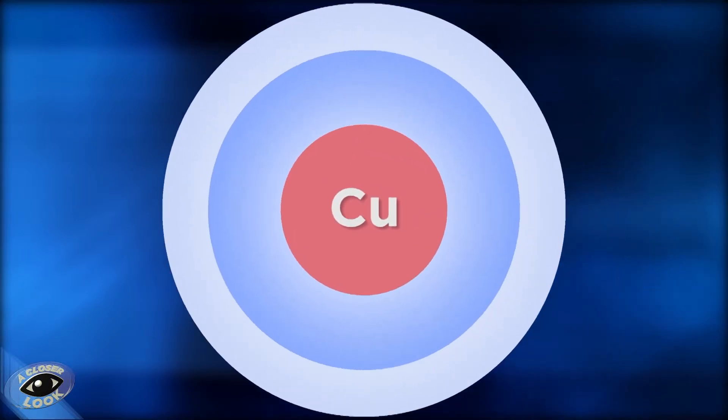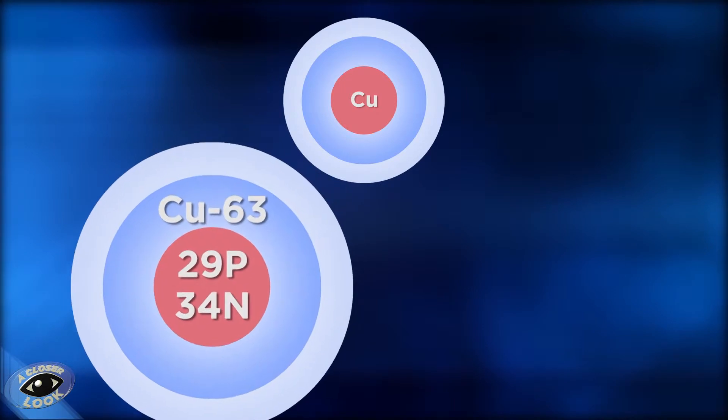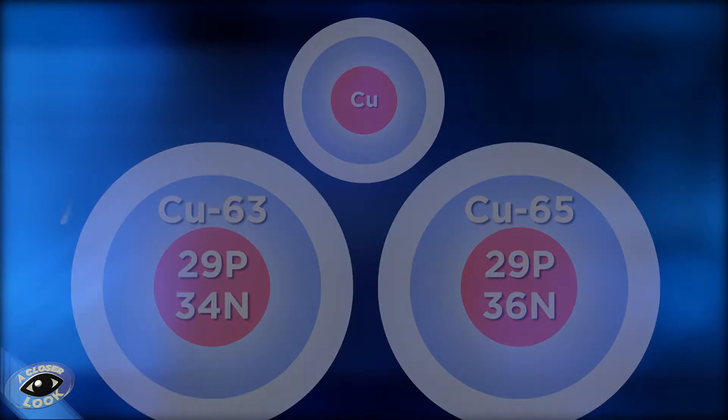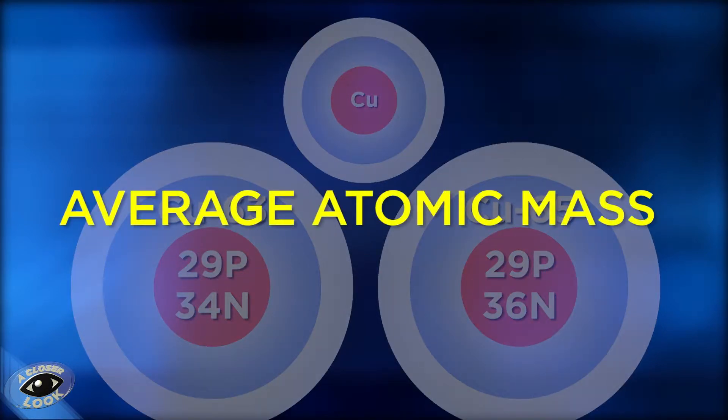And the variation in the number of particles in the nucleus means that the masses of atoms for a particular element will be different depending on the type of isotope that's present. So, when dealing with the masses of atoms, scientists need to know the average atomic mass for a given element. And that's what we'll be practicing calculating in this video.